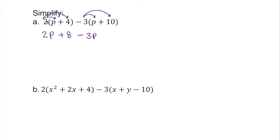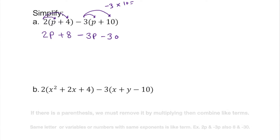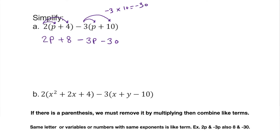2 times 4 is 8, and now 3 times positive 10 — we have to be very careful here. This is going to be negative 30. The reason is we have negative 3 times positive 10, which gives us negative 30. Now we've distributed the parentheses.